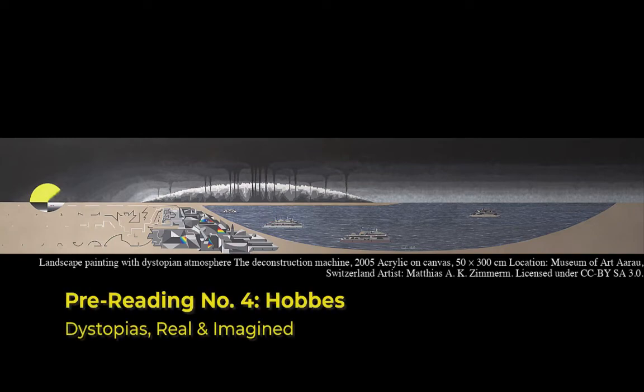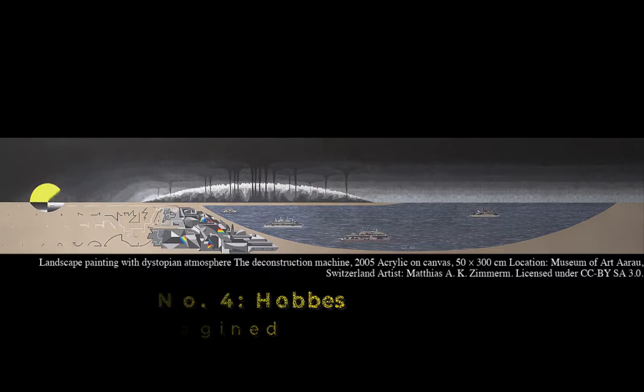For our penultimate annotated reading, we're going to take a tour back in time to look at a short selection from the political treatise Leviathan by Thomas Hobbes. Our reading will focus on just one of the many chapters of that book, chapter 13, which defines what Hobbes called the state of nature.